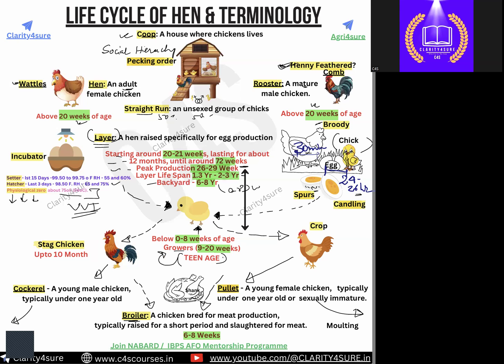Two more terms: cockerel is a young male chicken typically under one year of age. Pullet is a young female chicken, also under one year of age. So cockerel and pullet refer to young birds under one year of age — these terms also need to be remembered.